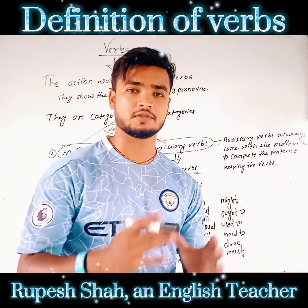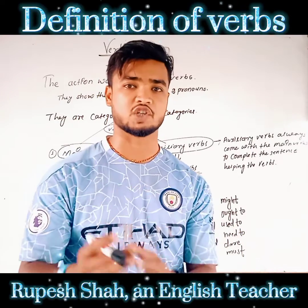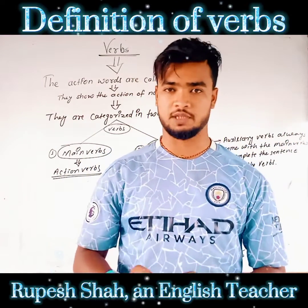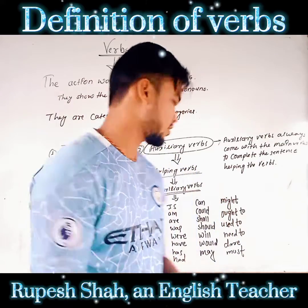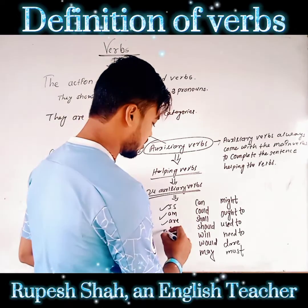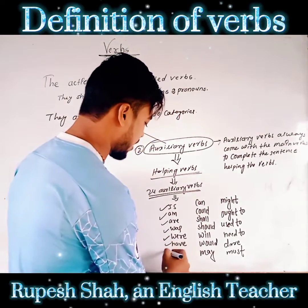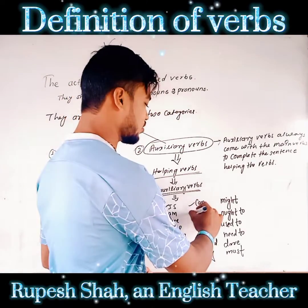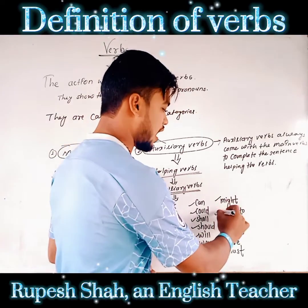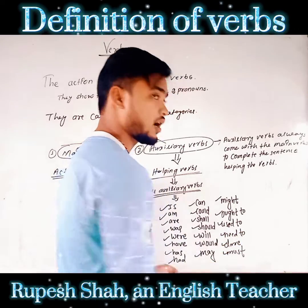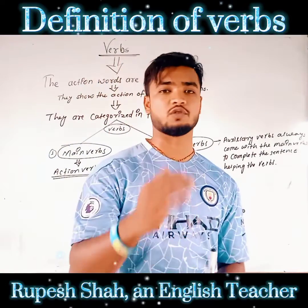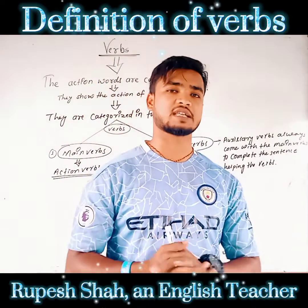There are 24 auxiliary verbs used in English grammar, both in American English and British English. They are: is, am, are, was, were, have, has, had, can, could, shall, should, will, would, may, might, ought to, used to, need to, dare, and must. We have to remember all of the auxiliary verbs before using exercises related to English grammar.